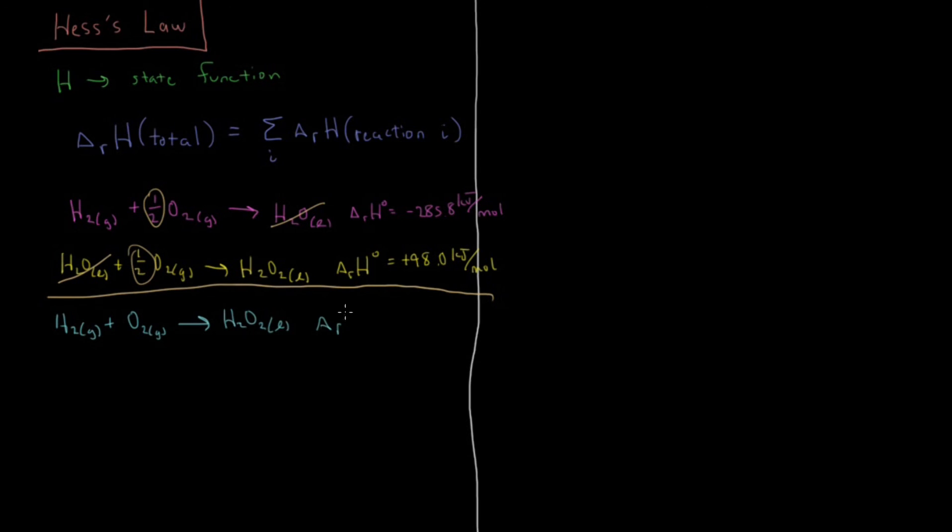So what is the enthalpy of reaction for this net reaction here that we are not given? Well, this works the exact same way it did in general chemistry. We just have a lot more background for why this is true now. We just take the enthalpy of each individual reaction which sums up to this net reaction and our final enthalpy is just going to be the sum of these two numbers, minus 187.8 kilojoules per mole.